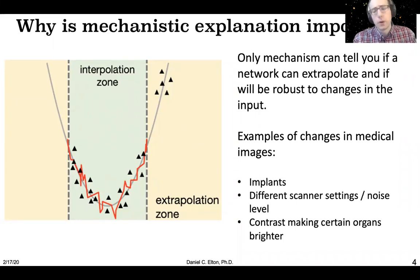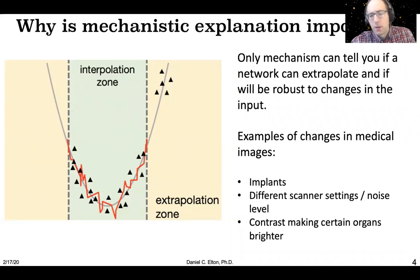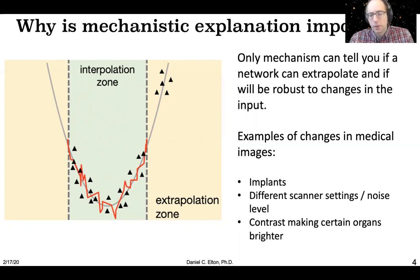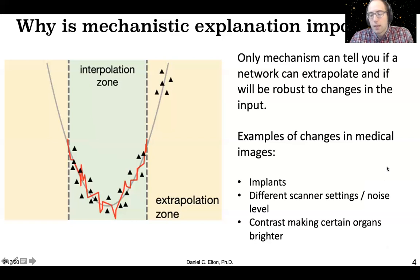I think mechanistic explanation is the most important type of explanation we can try to get. It's the only type that can tell you if the model is going to function when it's asked to extrapolate. As we know, deep learning is really not robust to small distributional shifts. For instance, DeepMind had a very impressive system for playing Atari games, but it was discovered that if you move the paddle just a little bit higher in the game of Breakout, that system completely breaks.